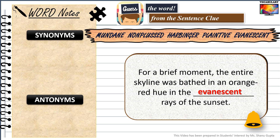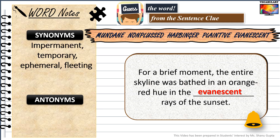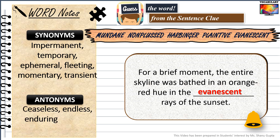Some synonyms of the word evanescent are impermanent, temporary, ephemeral, fleeting, momentary and transient. While antonyms would be words such as ceaseless, endless, enduring, eternal, long-lived and permanent.